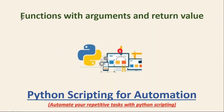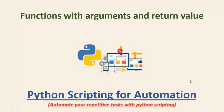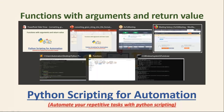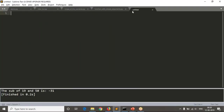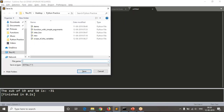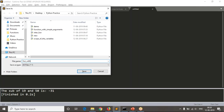Here we are going to discuss about functions with arguments and return value. We have already seen how to send arguments to your functions. Now what we are going to do is, along with your arguments, how you can get a return value from your function. Let me save a Python script named 'functions with arguments and return values dot py'.